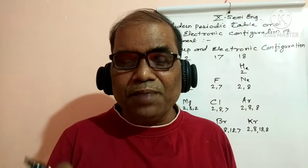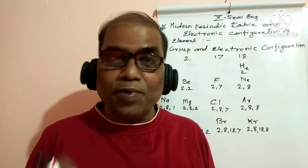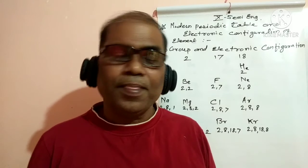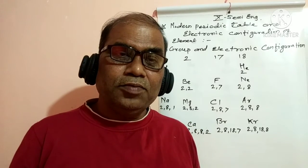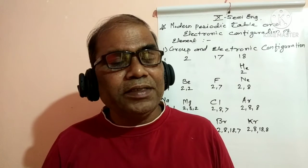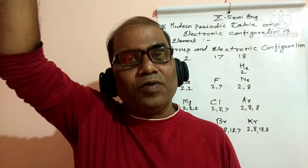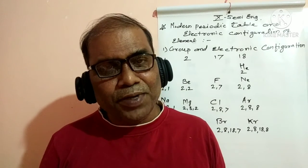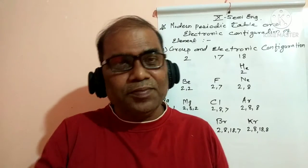Now, how does the property change in a group? The properties change from top to bottom in a group. Elements in the same group have the same outer shell electronic configuration, which is why they share similar properties.